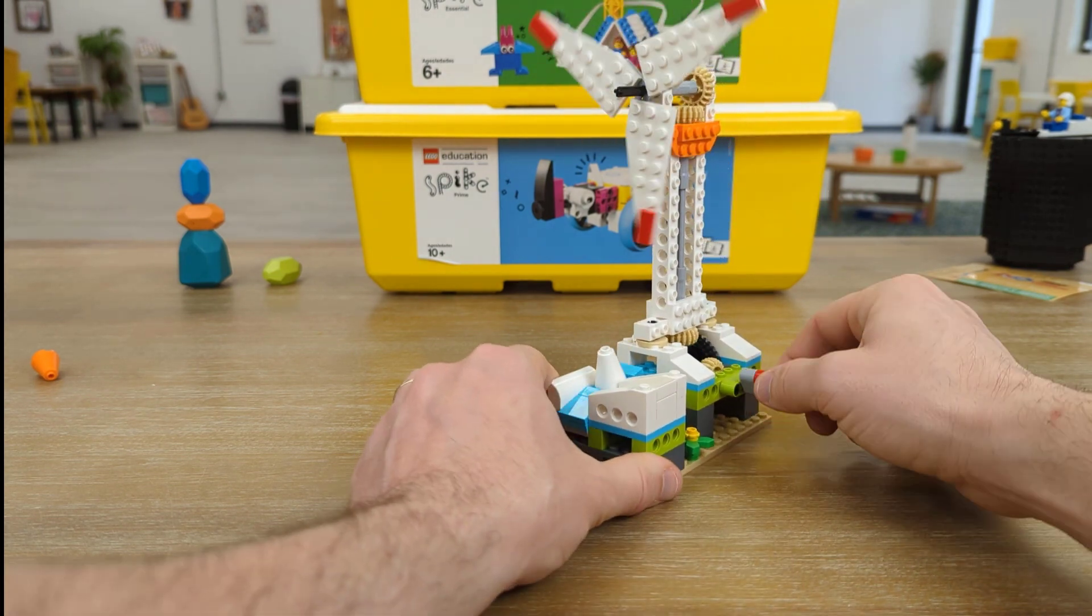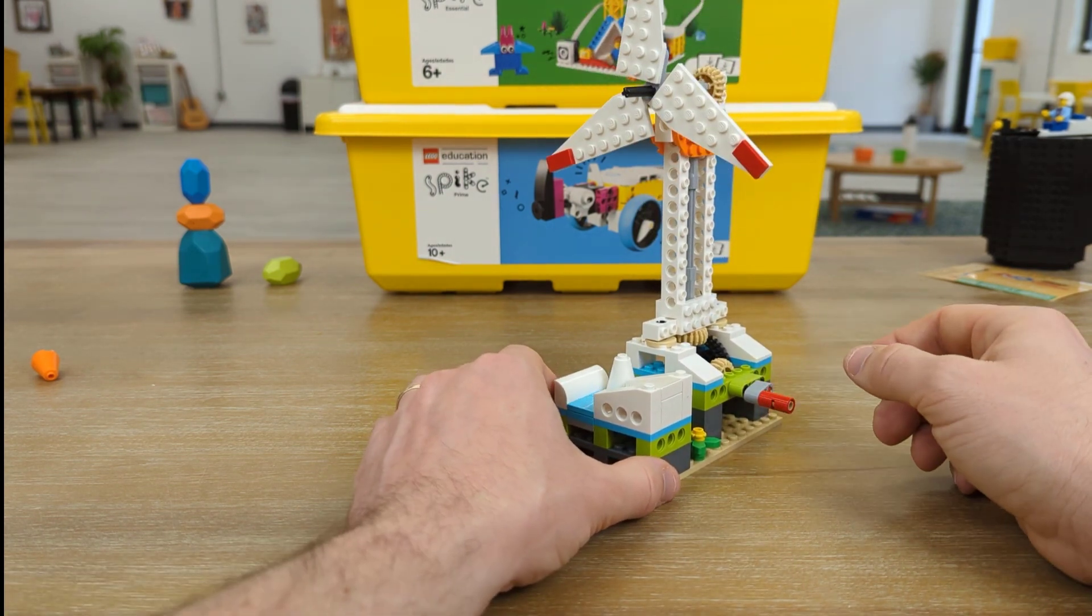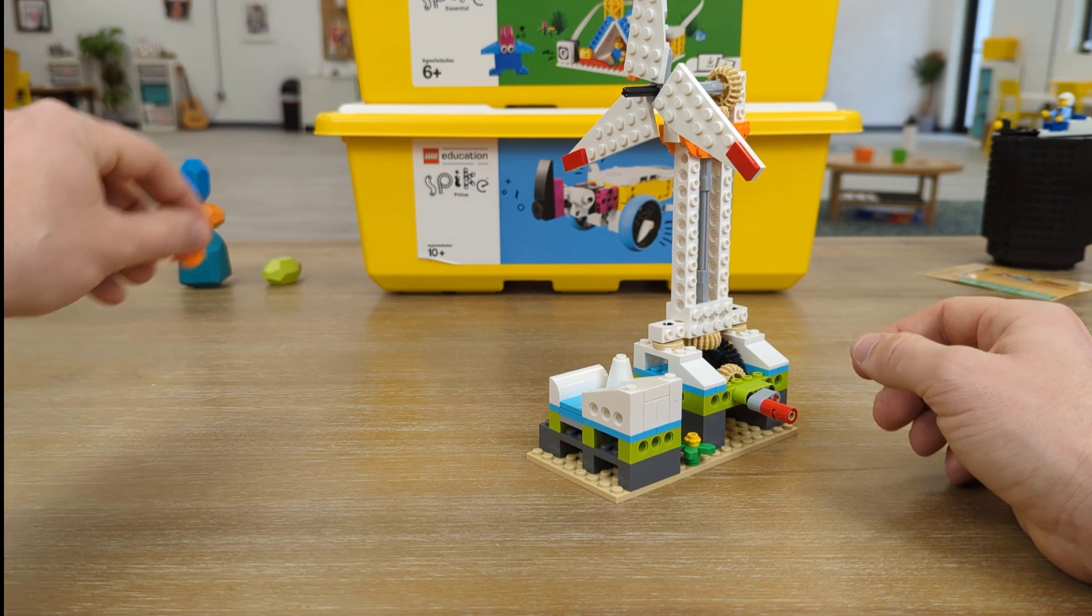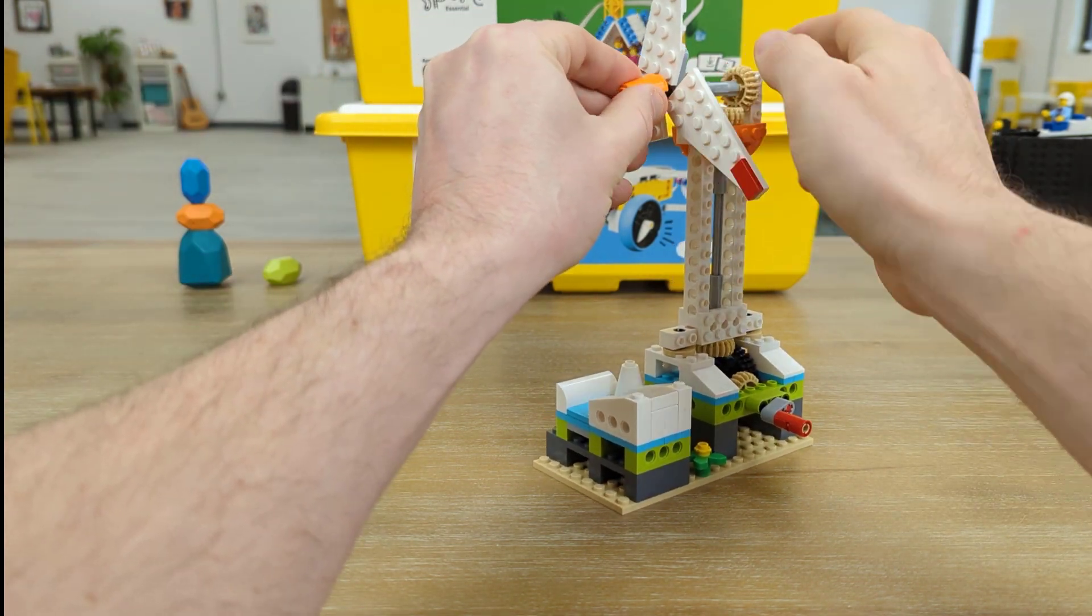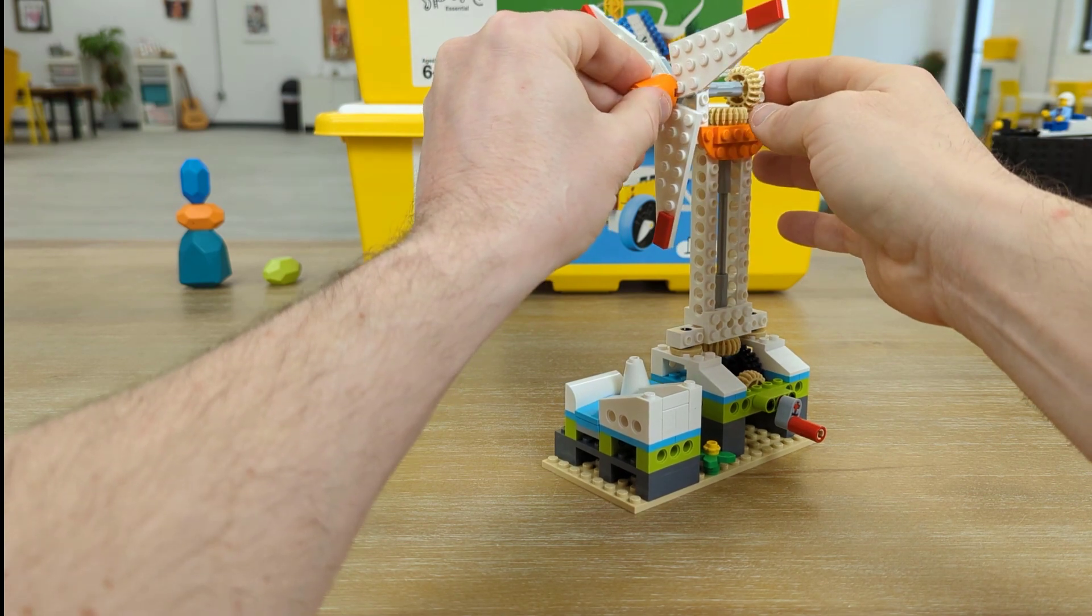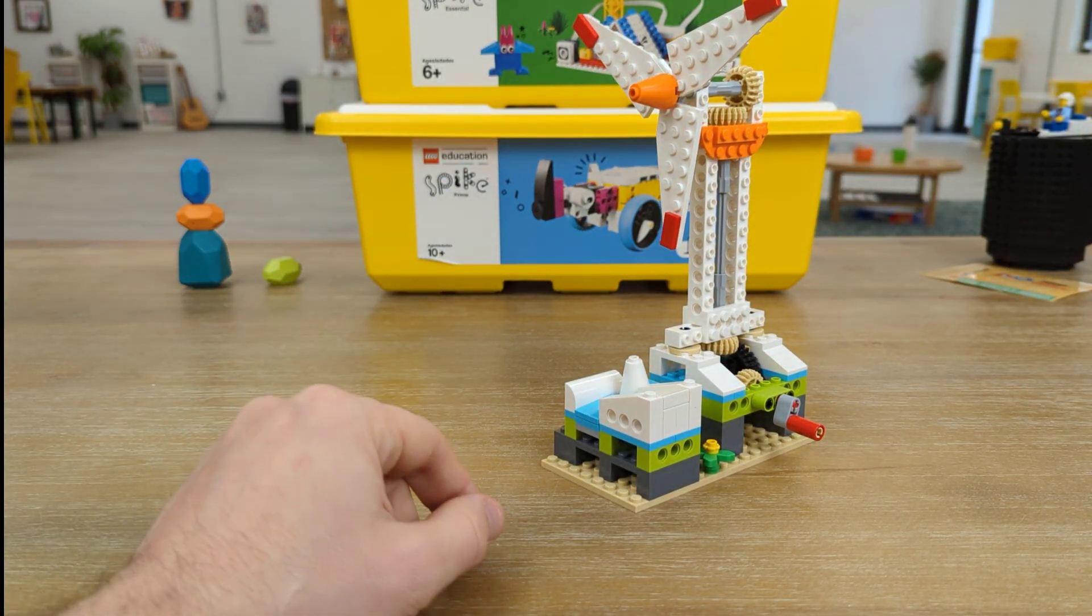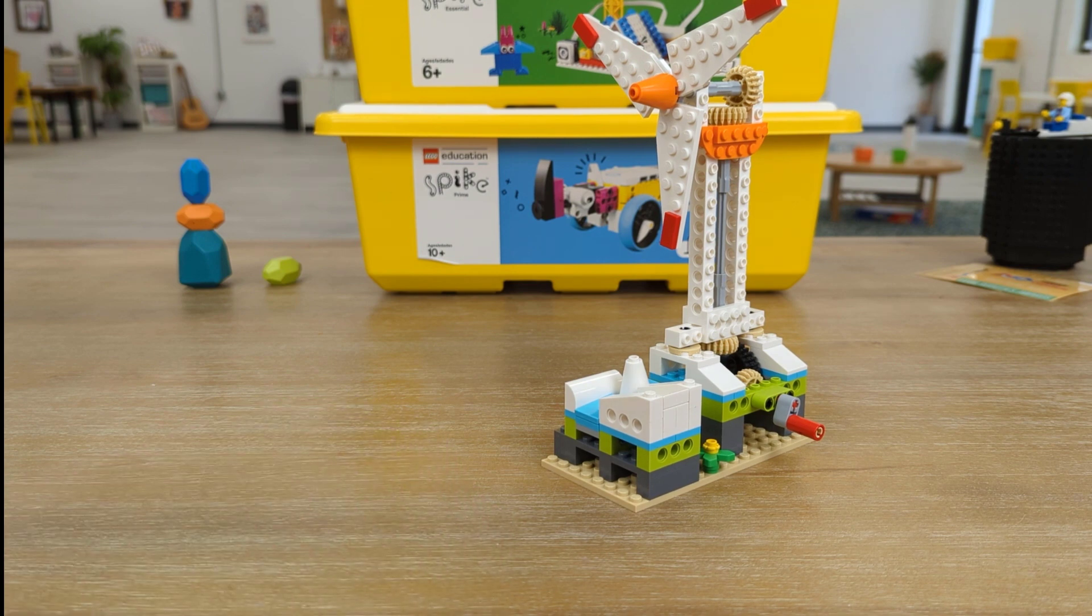This is fantastic. As we spin it, all of our gears move. Our energy unit ramp goes up and down. And let's just tie this together with a nice orange nose cone.